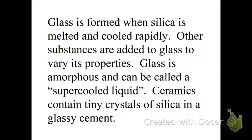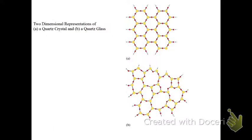Glass is formed when we melt silica and then cool it very rapidly. Other substances are added to glass to vary its property. We call glass an amorphous solid, and can be called a supercooled liquid. Ceramics contain tiny crystals of silica in glassy cement. Here is quartz crystals and quartz glass, so you can see the difference. Crystal is much more ordered, whereas quartz glass has things substituted in there.